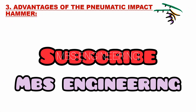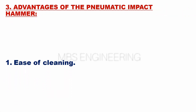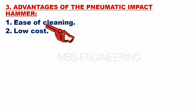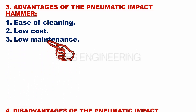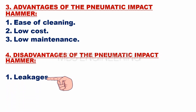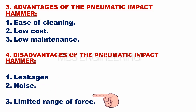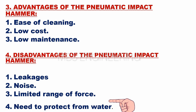The advantages of the pneumatic impact hammer system are: the first advantage is ease of cleaning; the second advantage is low cost; and the third advantage is low maintenance. The disadvantages of the pneumatic impact hammer system are: the first disadvantage is leakages; the second is noise; the third is the limited range of force; and the fourth is the need to protect from water.